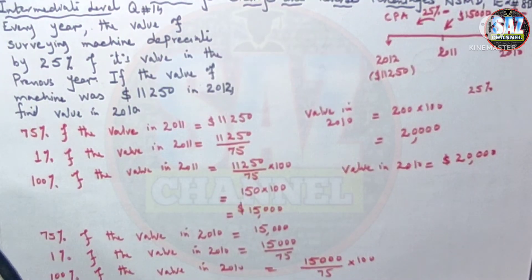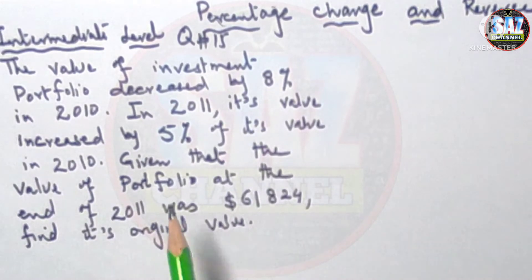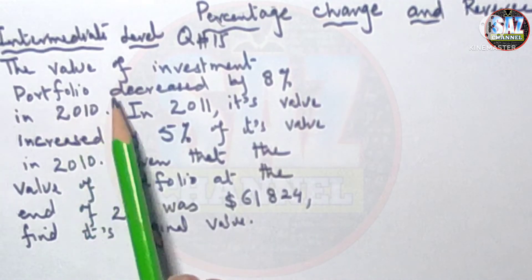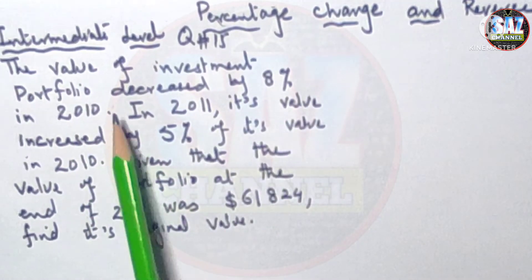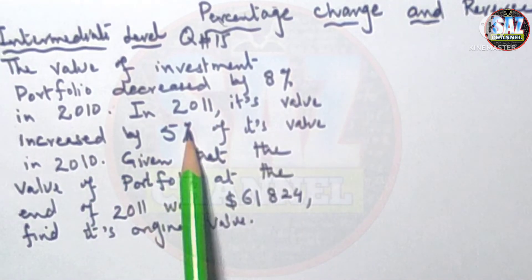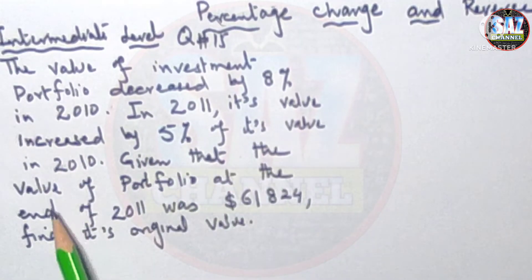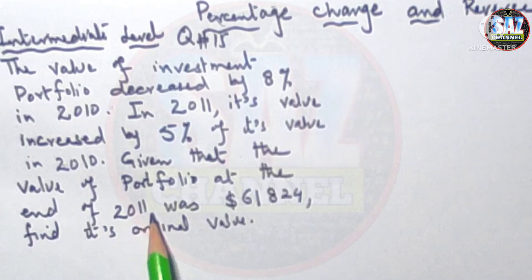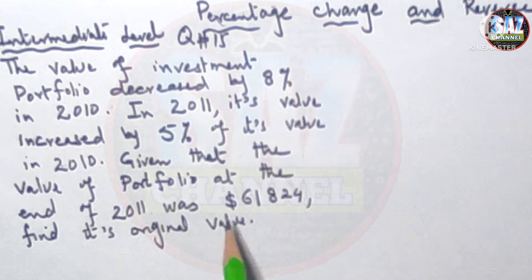I hope you are clear about percentage increase and reverse percentages. Moving to question 15, intermediate level. Question 15 says: the value of an investment portfolio decreased by 8% in 2010. In 2011, its value increased by 5% of its value in 2010. Given that the value of the portfolio at the end of 2011 was $61,824, find its original value.